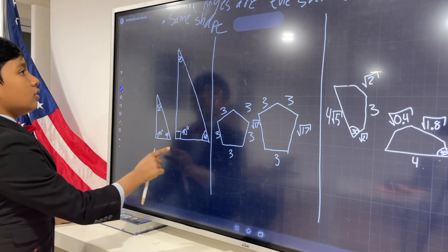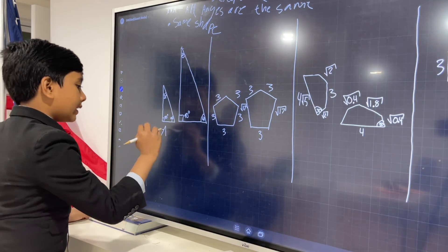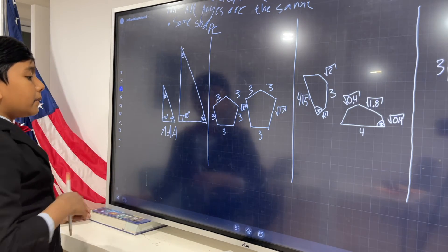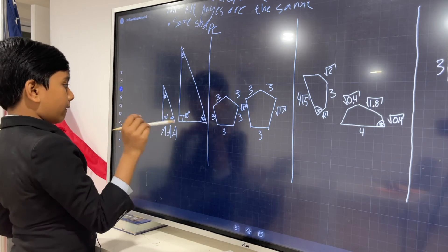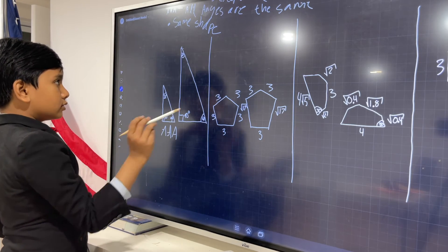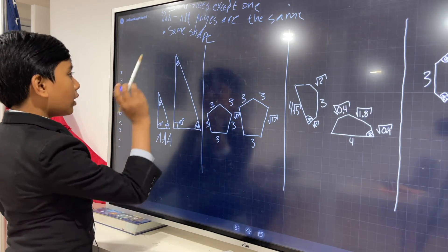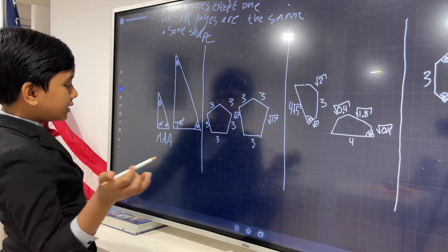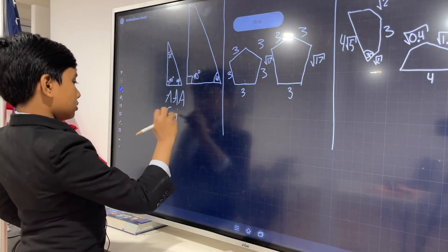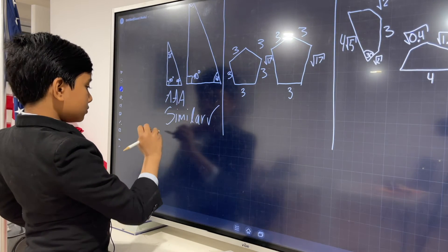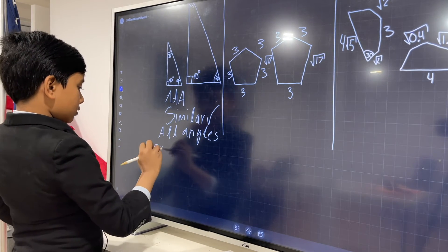So first of all we can use AAA for this method, for this problem, because we find that all three angles over here are the same, so all corresponding angles are equal to each other, meaning that they must be similar by the AAA rule. All angles are equivalent.